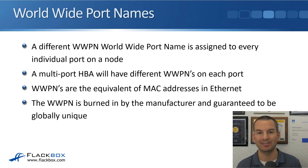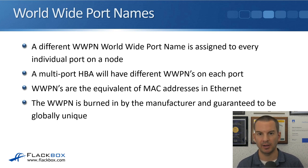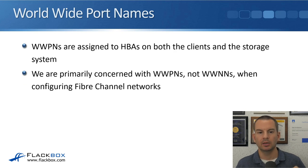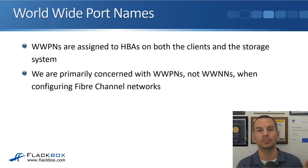WWPNs are the equivalent of MAC addresses in Ethernet. Just like a MAC address, the WWPN is burned in by the manufacturer and guaranteed to be globally unique — you do not need to manually configure it. When you get the HBA from the factory, the WWPN is already burned in, and the naming system ensures these addresses are always globally unique. No HBA in the whole world will have a duplicate WWPN. WWPNs are assigned to HBAs on both the clients and the storage system, and all endpoints need WWPNs to communicate. We're primarily concerned with WWPNs, not WWNNs, when configuring Fibre Channel networks.